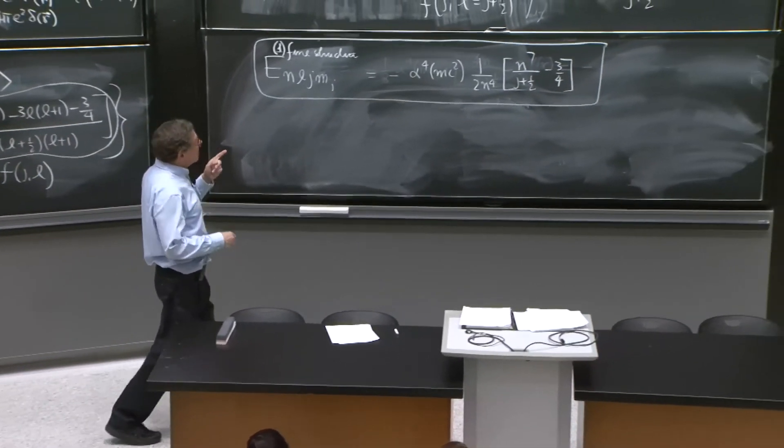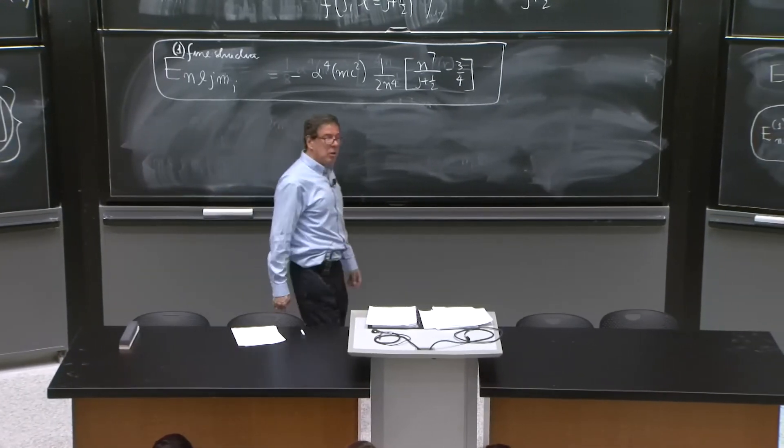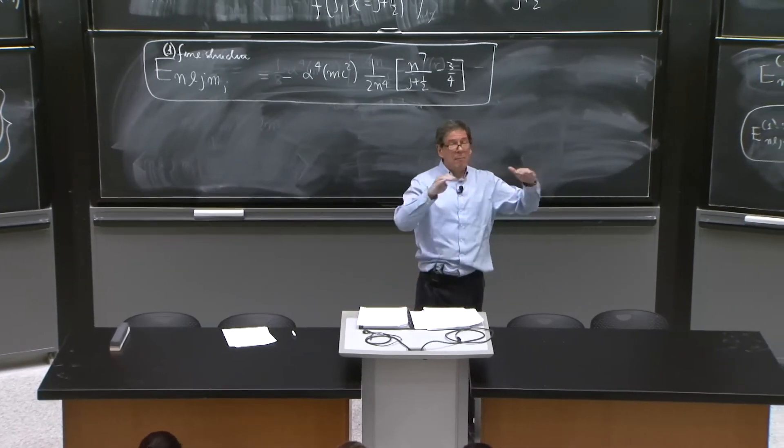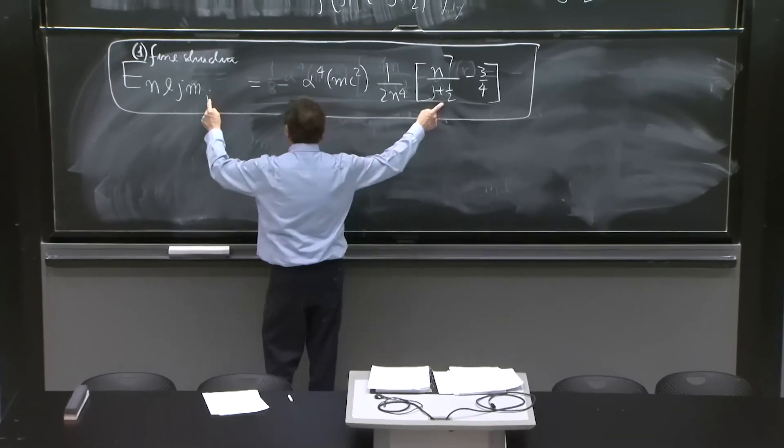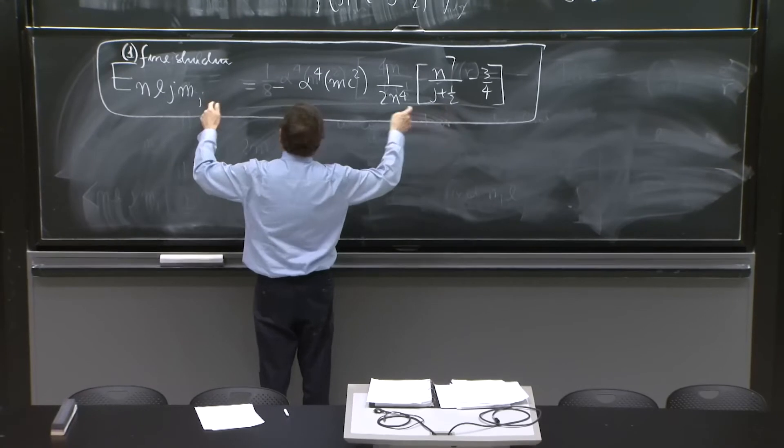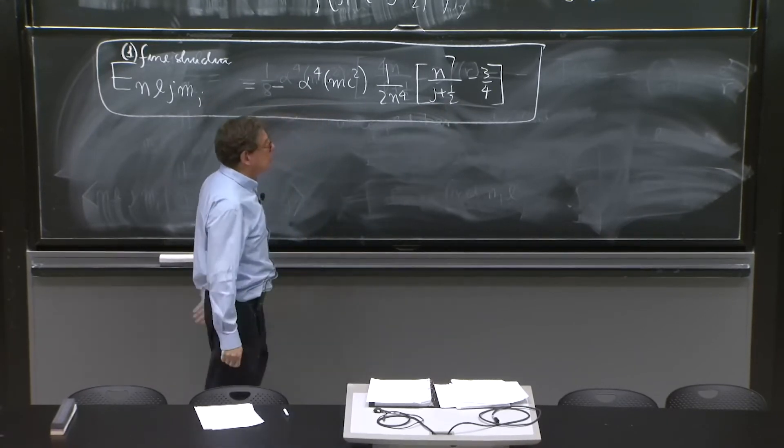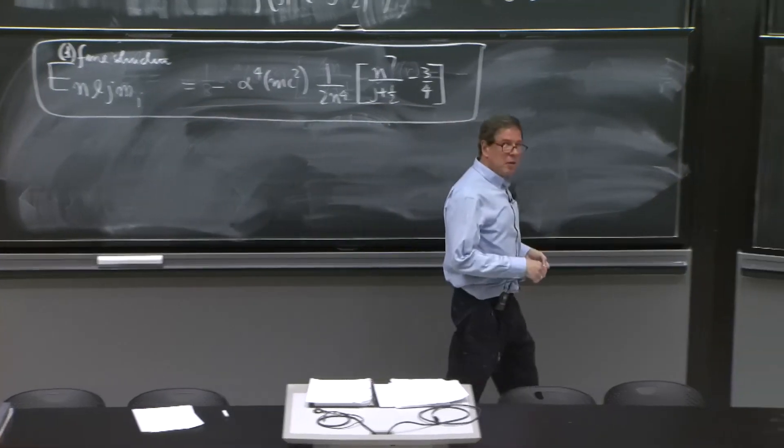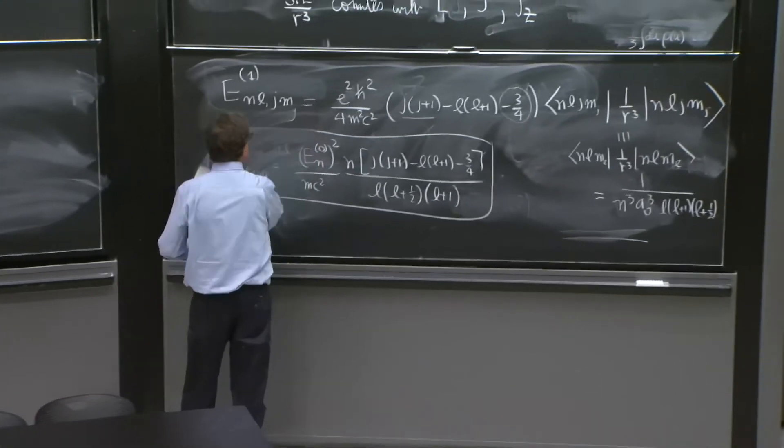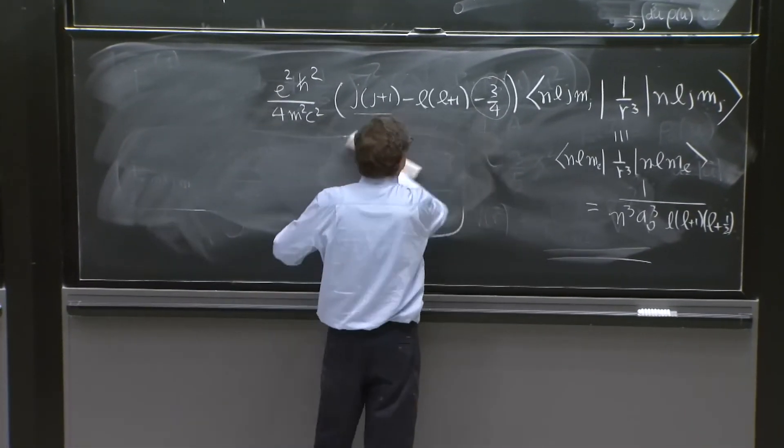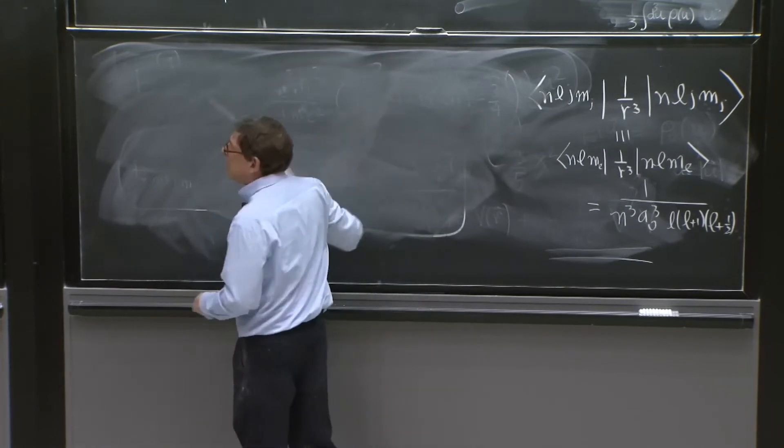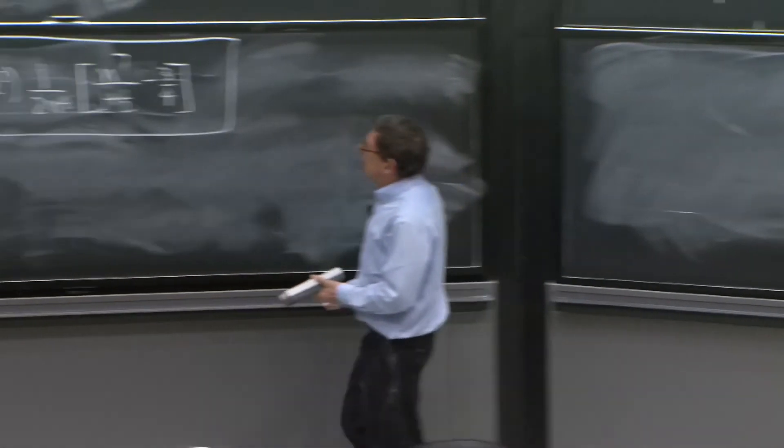This means that the j multiplets are not going to be split. And there's going to be moreover some degenerative. They're not split because there's no mj dependence. And they are all going to be the same. So let me finish by drawing how the spectrum looks. It's pretty important to see that.